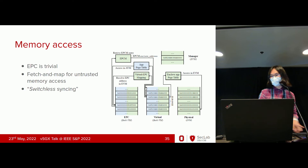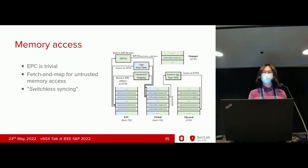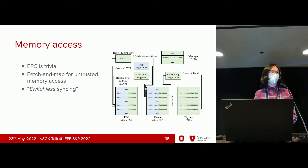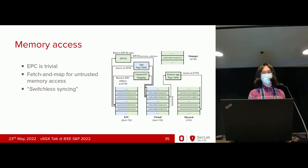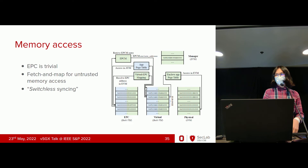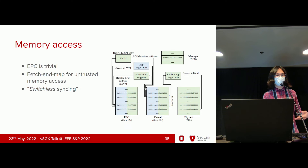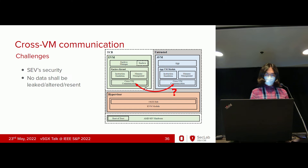For memory access, recall the one-way access. Intel calls the enclave protected memory EPC — Enclave Page Cache. We map pages to the EVM, which is isolated from the AVM and the hypervisor so they can't access it. But when the enclave tries to access untrusted memory outside, we use a fetch-and-map mechanism: on a page fault, we fetch that untrusted page from the AVM to the EVM and map it so the enclave can access it. Since there are two copies of the page across the two VMs, we also created a switcher syncing mechanism that actively syncs page changes across both VMs.